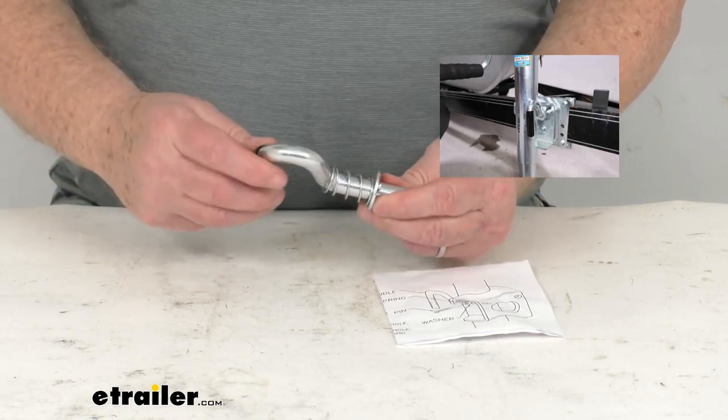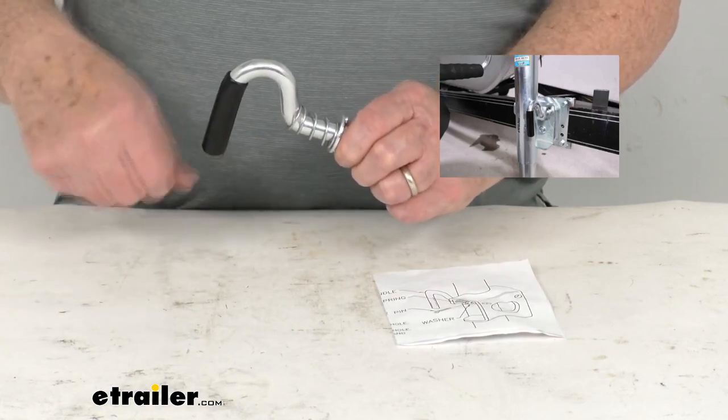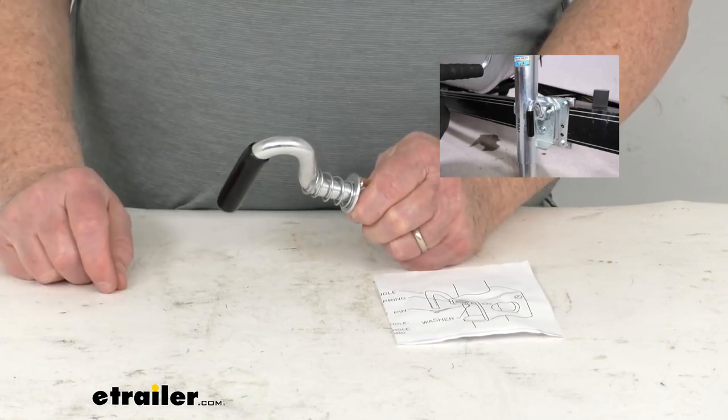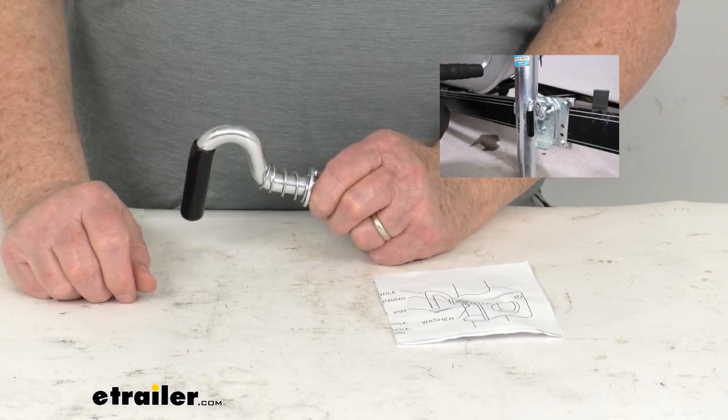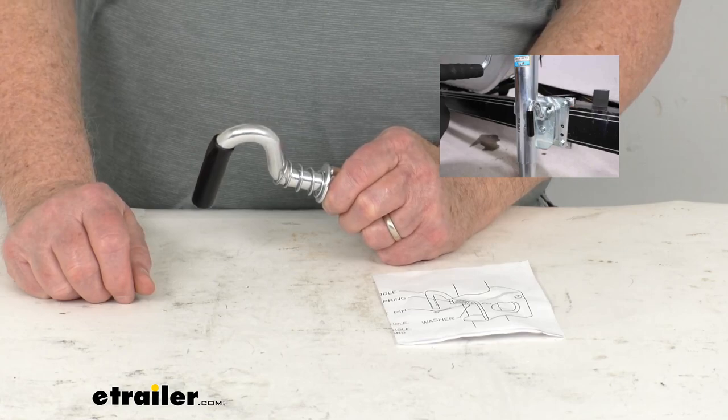When you pull this out, it allows you to swing your jack down and then use the jack to lift the trailer. When you're done and you crank your jack back in, you can pull it back out and it allows you to swing your jack up along the trailer when the jack is being stored in the travel position.